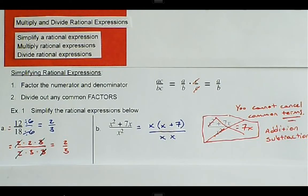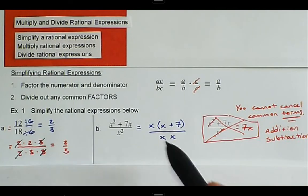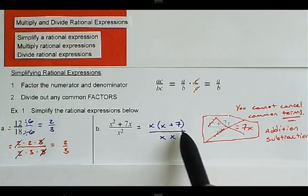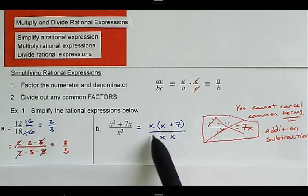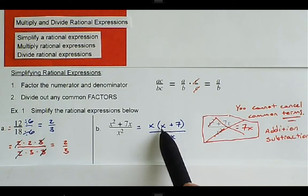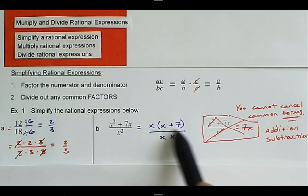x times x. Now, these terms are all joined by multiplication. We have x times the binomial x plus 7 divided by x times x. There is addition up here, but that's part of that binomial, which makes a factor. x plus 7 is a factor together.